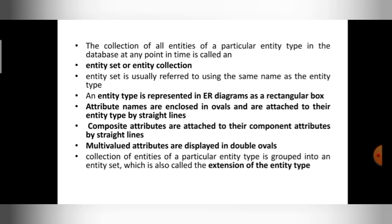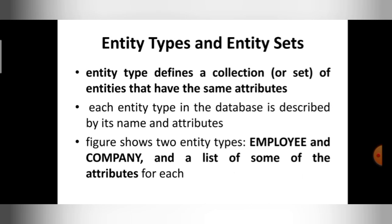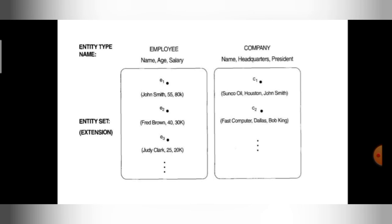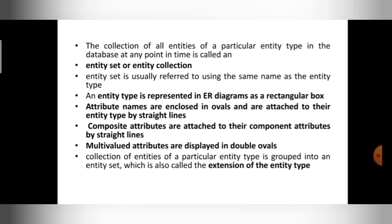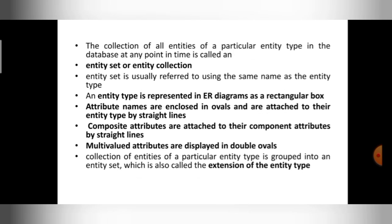The entity set can also be called an extension because I can group all familiar entities into a set. Entity type is a collection of entities with similar attributes — employee is one type, company is another type. The employee type contains a collection of entities e1, e2, e3, which can be called an entity set, and an entity set can also be called an extension.